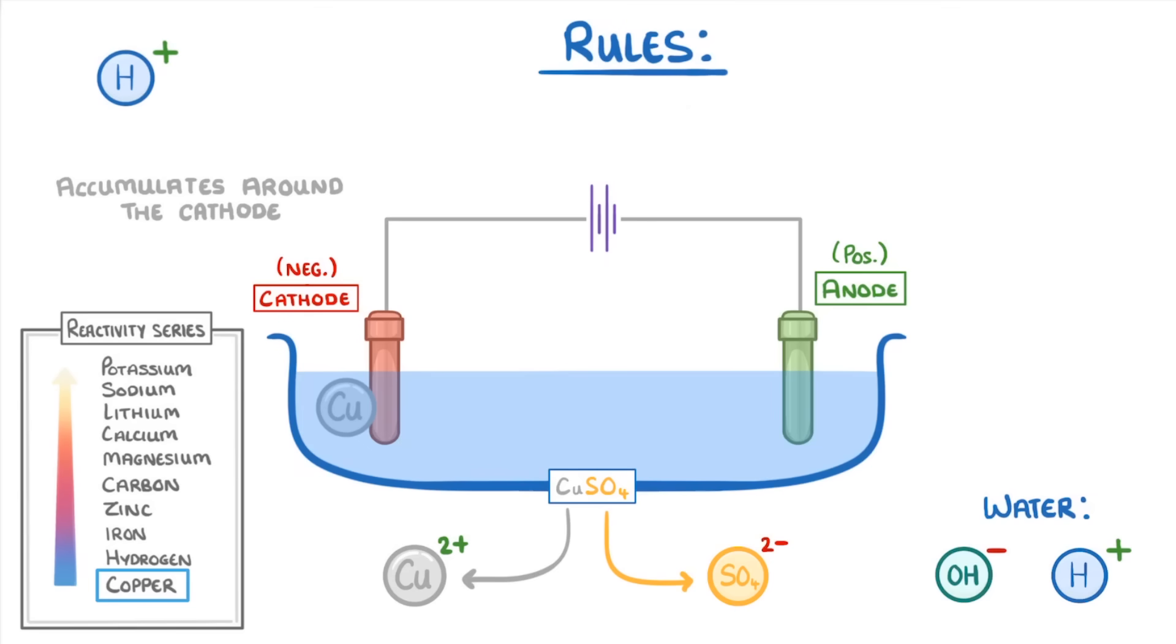Meanwhile for the positive anode, it could either discharge the hydroxide ions or the sulfate ions. So it would discharge the hydroxide, because our rule was that it will always do the hydroxide ions unless halides are present. So the hydroxide ions will give up their extra electron to the anode, and they actually go to form oxygen and water.